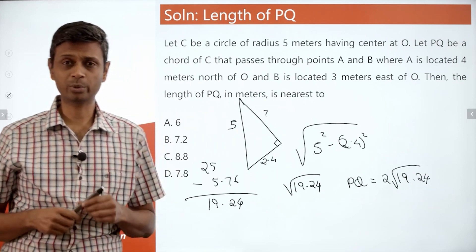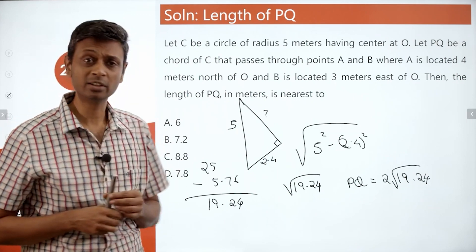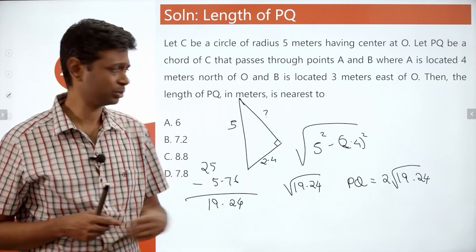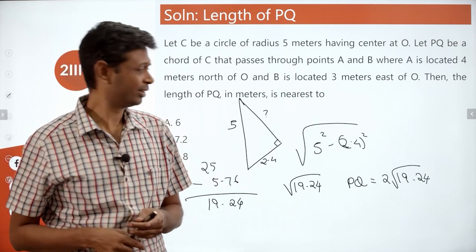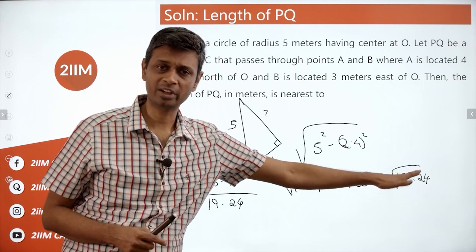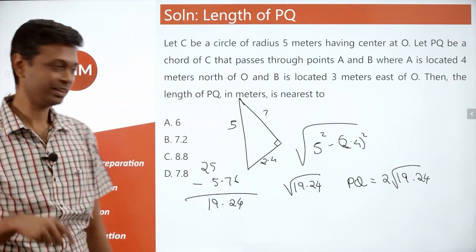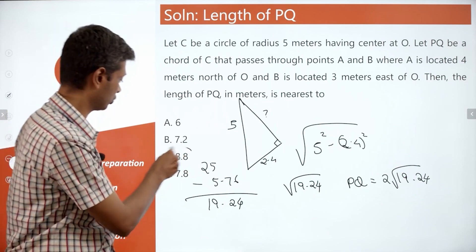4 square is 16, 5 square is 25, 4.5 square is 20.25. So this is between 4 square and 4.5 square, closer to 4.5. So maybe this is 4.4, 4.35, something like that, into 2. You are looking for an answer in the 8.7, 8.8 range. This works.